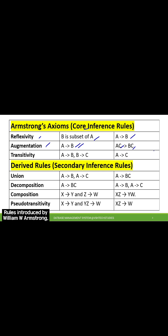The Transitivity rule states that if A determines B and B determines C, then A determines C. Under derived rules, or secondary inference rules, the Union rule states that if A determines B and A determines C, then...